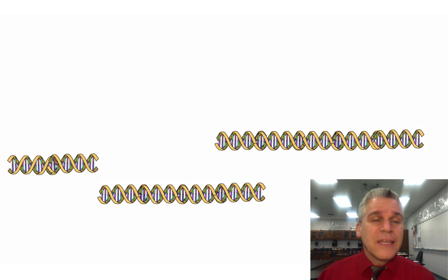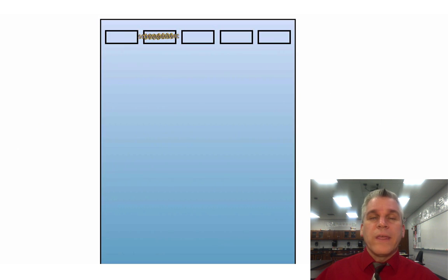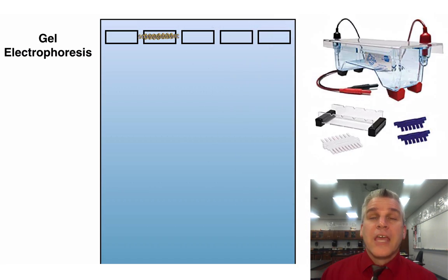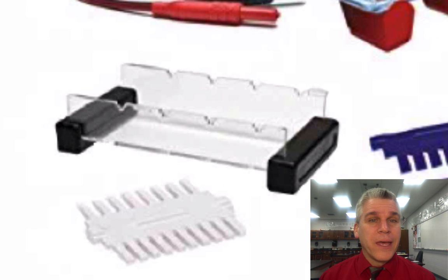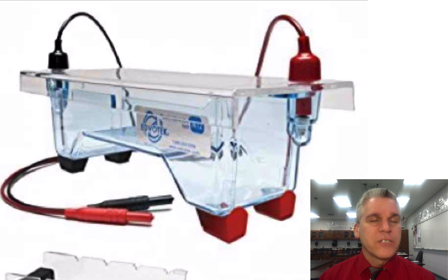And notice it ends up cutting it into different size pieces. So what we can do as scientists is we can take that DNA and put it into a special type of gel-like substance called an agarose gel. And we can do what's known as gel electrophoresis. Now this is just a really big word for something that's very easy to do. Here is what a gel electrophoresis machine looks like. Here in this structure that is called a bed, we can make a special type of gel that has indentations in it. The indentations are made by these combs.